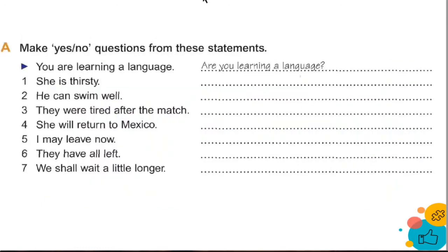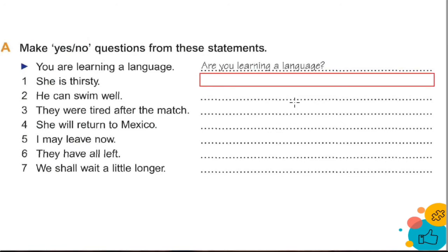Ahora vamos a los ejercicios — solo son preguntas, señores, muy fácil. Make yes/no questions from these statements. For example: 'You're learning a language' → 'Are you learning a language?' Number one: 'She is thirsty.' ¿Ella está hambrienta? What do you think? Is she thirsty? Ella está hambrienta.